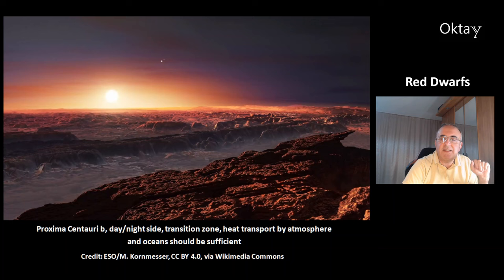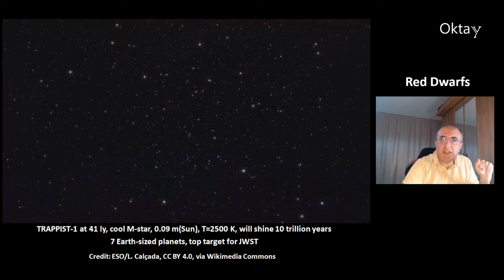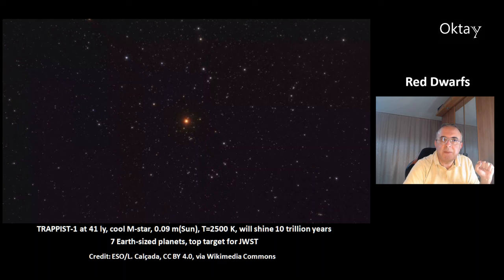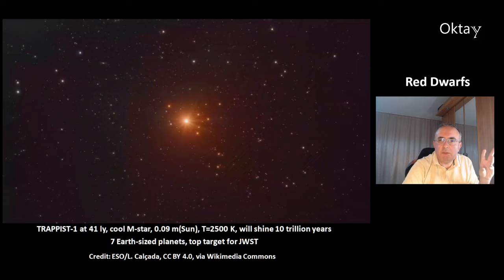This is a virtual trip to another nearby red dwarf system: TRAPPIST-1 at 41 light-years distance, another cool M-star with just 9% of the sun's mass. Its surface temperature is less than half the sun's, at 2,500 Kelvin. These small red dwarfs are known for their extremely long main sequence lifetime — this star will shine for 10 trillion years. It has seven Earth-sized planets, making it a top target for the James Webb Space Telescope.